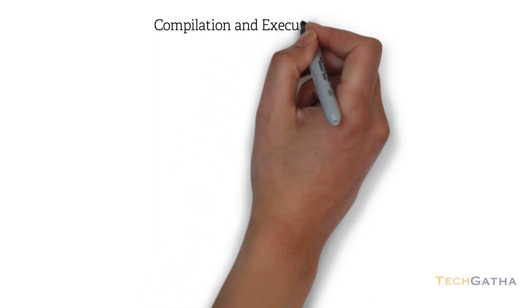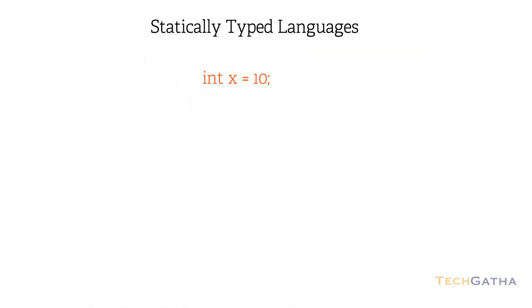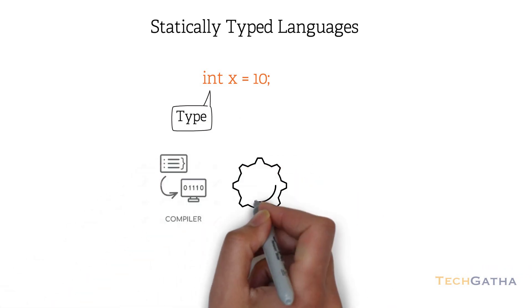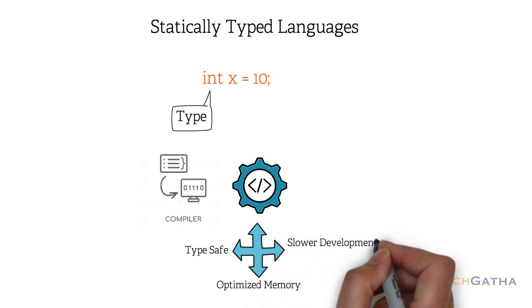Now let's understand the compilation and execution process for each of them. In statically typed languages, variables are declared with data types. As these languages are compiled by a compiler before execution, they are type safe, produce machine code that helps in optimizing memory, but the extra compilation step makes the development cycle slower.